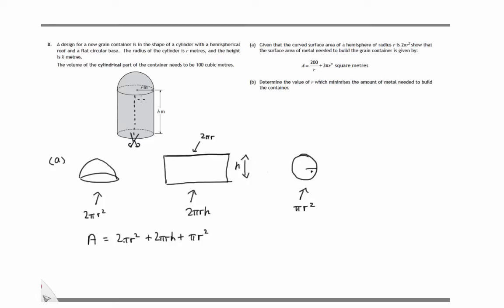Now it tells us the volume of the cylindrical part. Let's just draw a picture of that. There's the cylindrical part with radius r and height h, and we're told that the volume of that is 100 cubic metres. Now we know the volume of a cylinder is the area of the base times the height. So the volume equals πr²h, and that's what's equal to 100. So we can get an expression for h in terms of r by dividing both sides of this by πr².